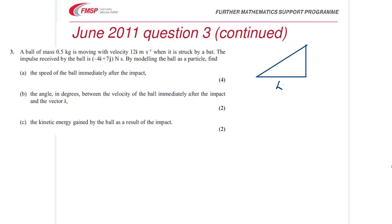4, 14, and we want this angle here between the velocity of the ball and the i direction. So tan θ is opposite over adjacent, and θ is 74 degrees. Check that. That's part b done.